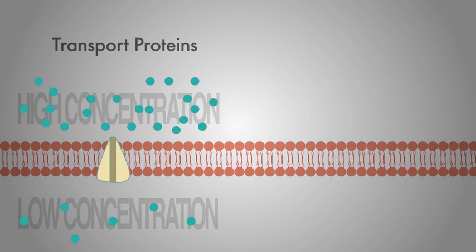This process of moving molecules across a membrane with a transport protein that doesn't require energy in the form of ATP is called facilitated diffusion.